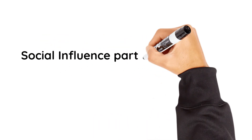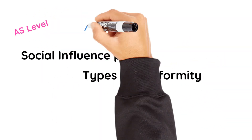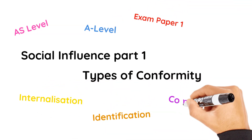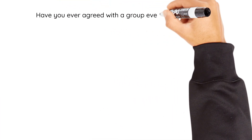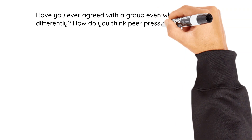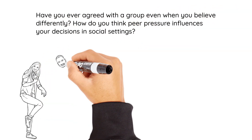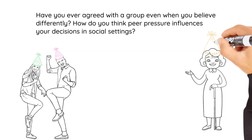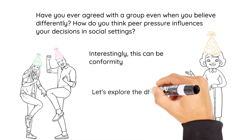Welcome to part one of our A Level Focused Social Influence videos. We will explore the three main types of conformity: internalization, identification, and compliance. Quick question — have you ever agreed with a group even when you believed differently? And how do you think peer pressure influences your decisions in social settings? Interestingly, as we will see, this can be conformity. Let's explore the different types further.